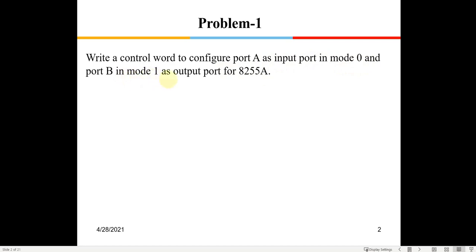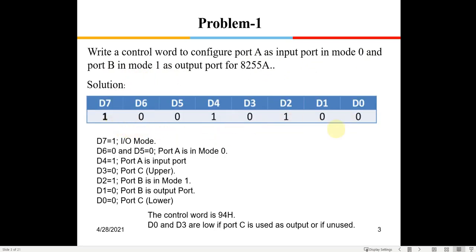Port A is to be configured as input in mode 0 and port B as output for mode 1. The control word is 8-bit. The most significant bit D7 is going to be 1 because it is I/O mode — if it is 0 it is BSR (bit set reset), which is only for port C. The next two bits D6 and D5 indicate the mode of operation of port A. Since port A is to be configured as mode 0, that becomes 0 0.